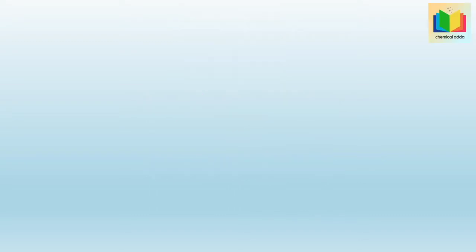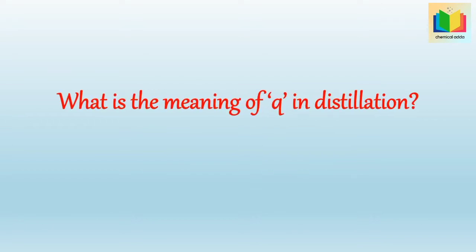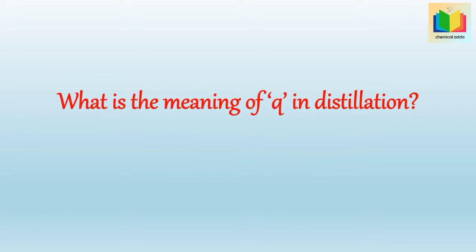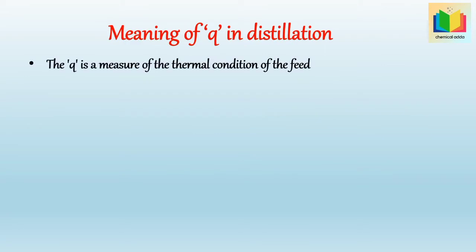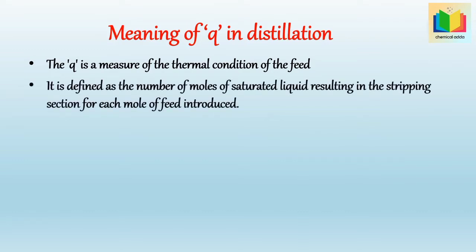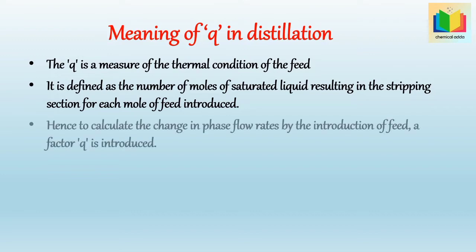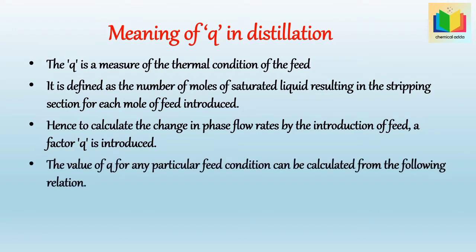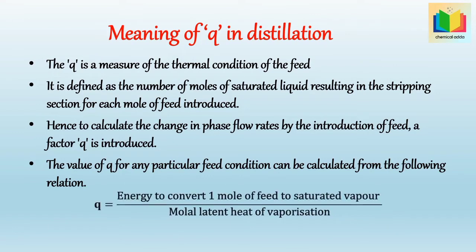What is the meaning of q in distillation? Q is a measure of the thermal condition of the feed. Q is defined as the number of moles of saturated liquid resulting in the stripping section for each mole of feed introduced. A factor q is introduced to calculate the change in phase flow rates by the introduction of feed. The value of q can be calculated as: q equals energy to convert one mole of feed to saturated vapor divided by molar latent heat of vaporization.